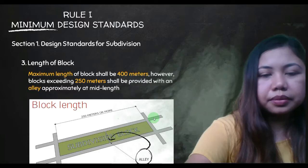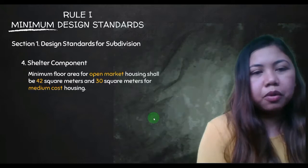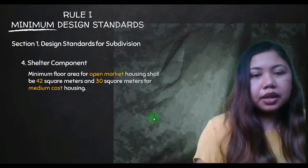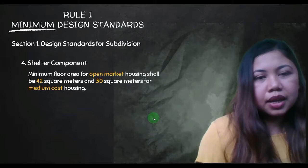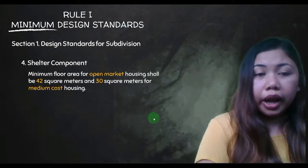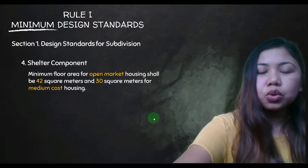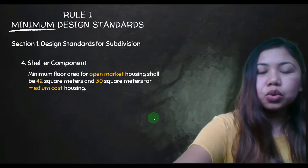Fourth — shelter component. The minimum floor area for open market housing shall be 42 square meters, and 30 square meters for medium cost housing. Open market has a larger minimum floor area compared to medium cost.